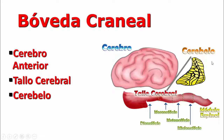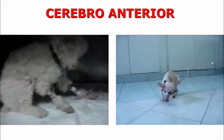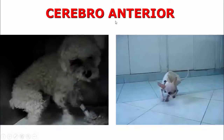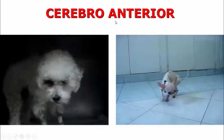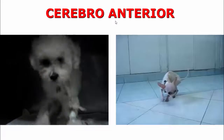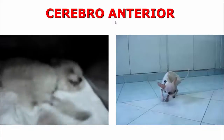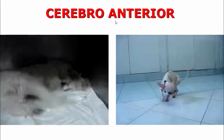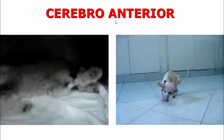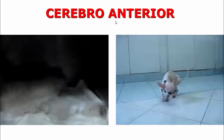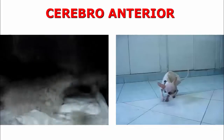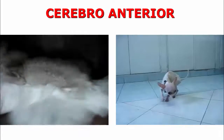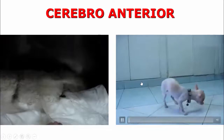Dentro de la bóveda craneal tendremos tres zonas: cerebro anterior, tallo cerebral y cerebelo. Cualquier paciente que convulsione va a tener afectación hacia el cerebro anterior. Solamente el cerebro anterior convulsiona, ya sea por sí solo o por reacción ante un medio ambiente hostil. Siempre que tengamos pacientes con convulsiones, buscaremos dentro del cerebro anterior la lesión.